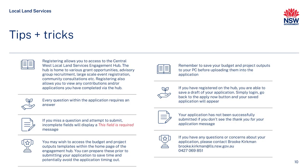Finally, we take a look at some small grants tips and tricks to help you with your application process. Firstly, we recommend you register on the Engagement Hub. This allows you to begin your application, save a draft, and complete your application at a time suitable for you. Every question within the application requires an answer. If you miss a question and attempt to submit, a 'this field is required' message will appear.